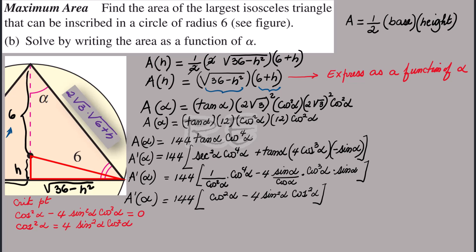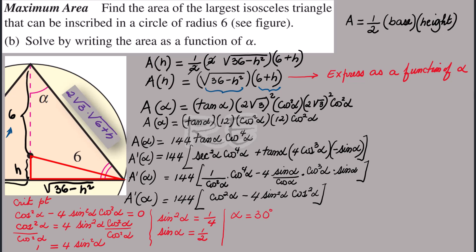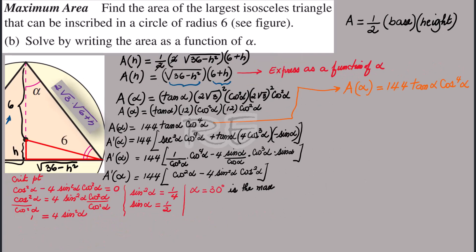Setting the derivative equal to zero: cos²(α) − 4·sin²(α)·cos²(α) = 0. Dividing by cos²(α) (since cos(α) ≠ 0): 1 = 4·sin²(α), so sin²(α) = 1/4, and sin(α) = 1/2. Therefore α = 30°, which is the maximum.